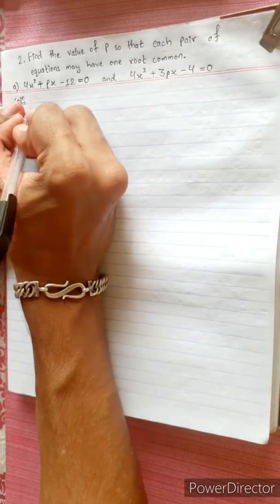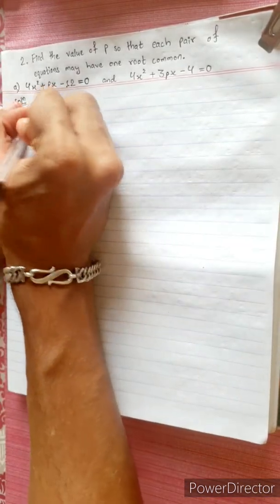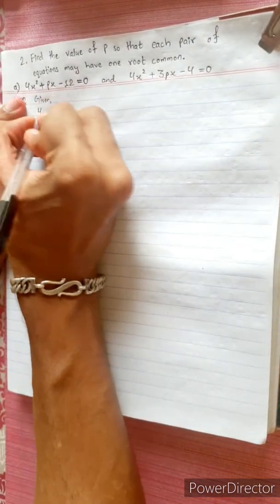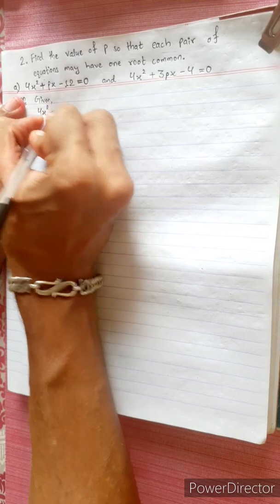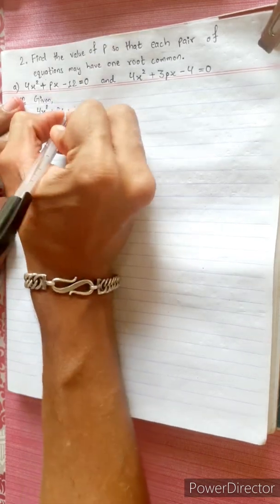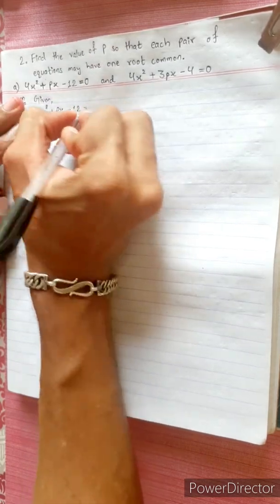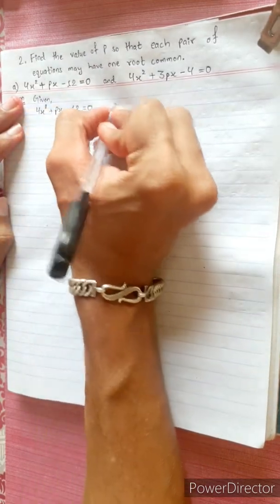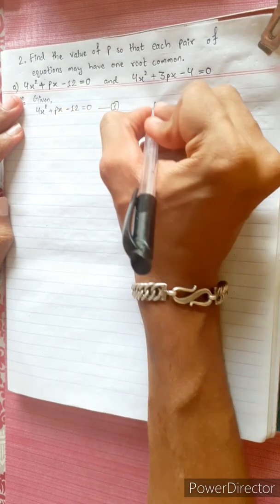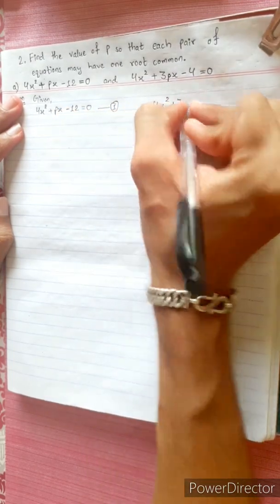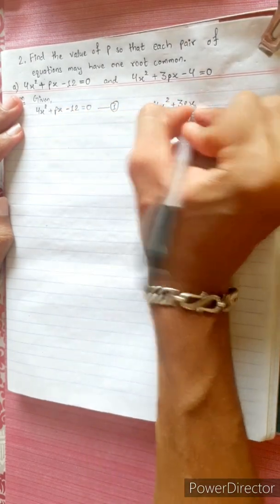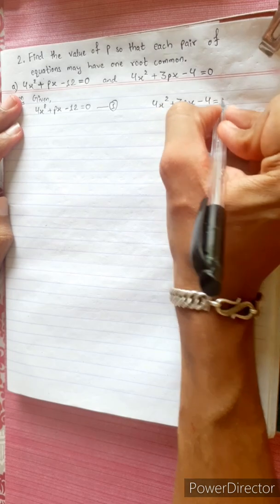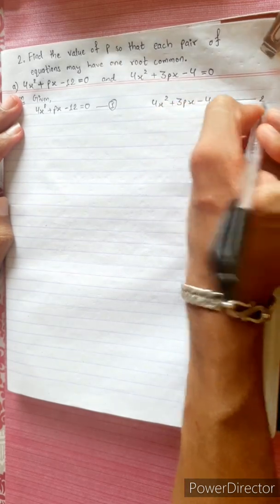The data equation is given. Equation 1: 4x² + px - 12 = 0. Equation 2: 4x² + 3px - 4 = 0.